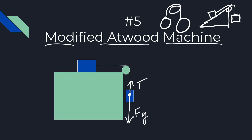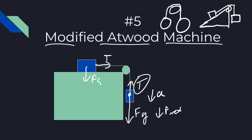For the mass on the table, there's a tension — and these two tensions should be the same. There's a force of gravity and a normal force, and there may or may not be friction. If there is friction, we draw it opposing the motion; if not, leave it blank.